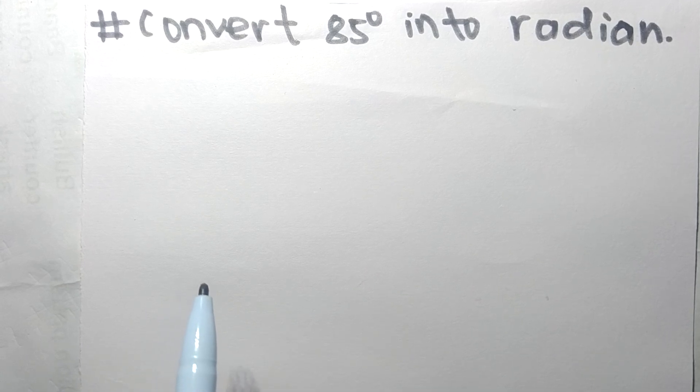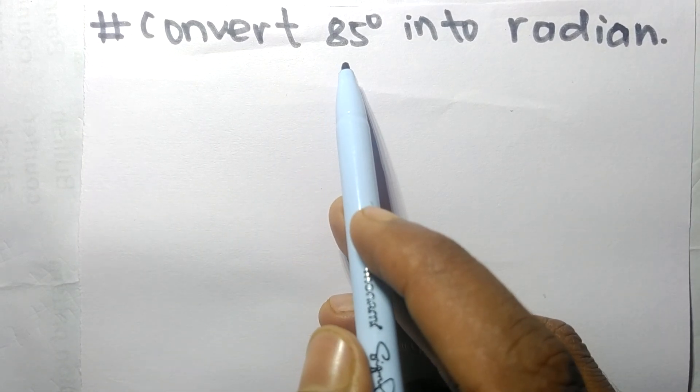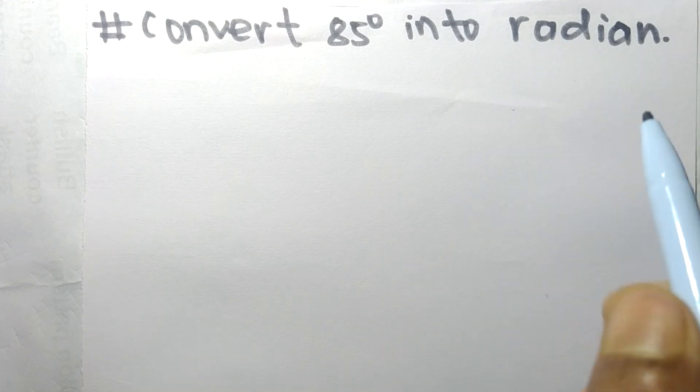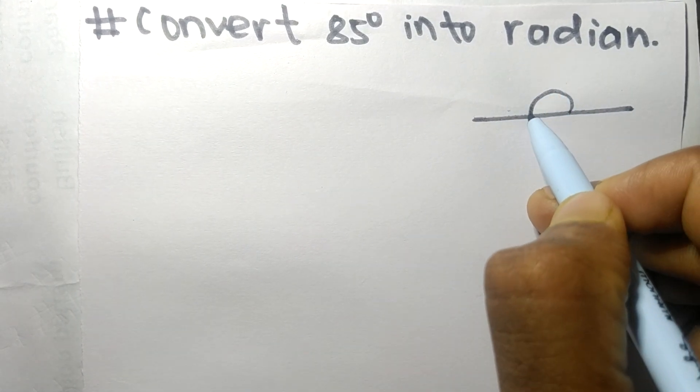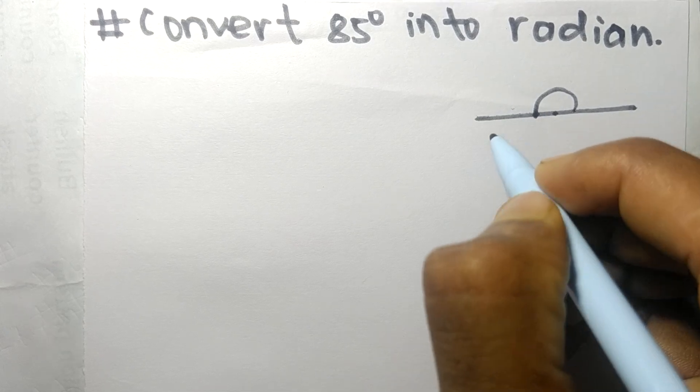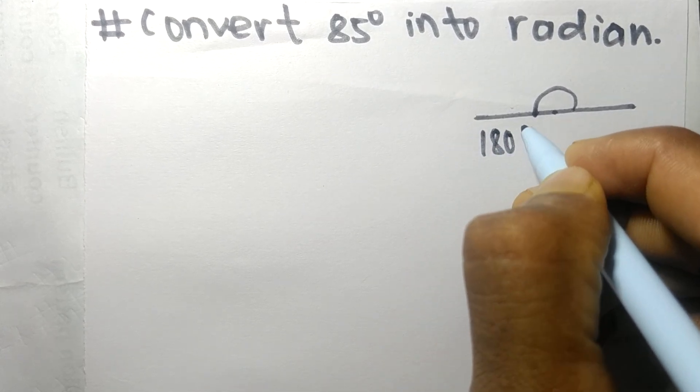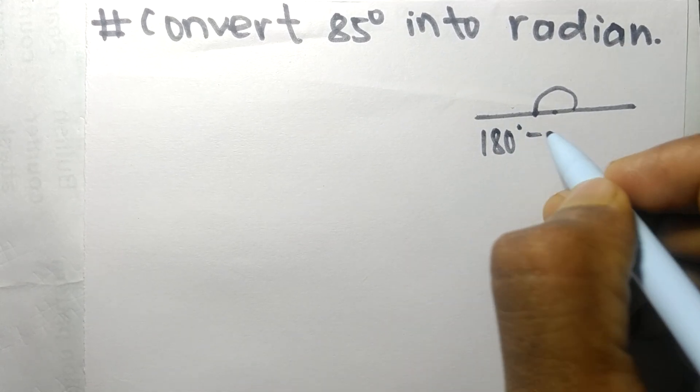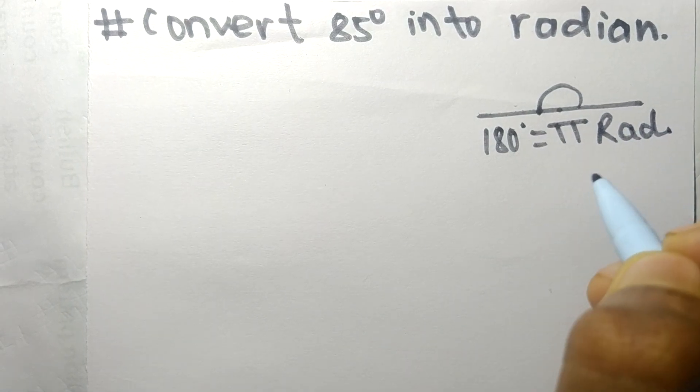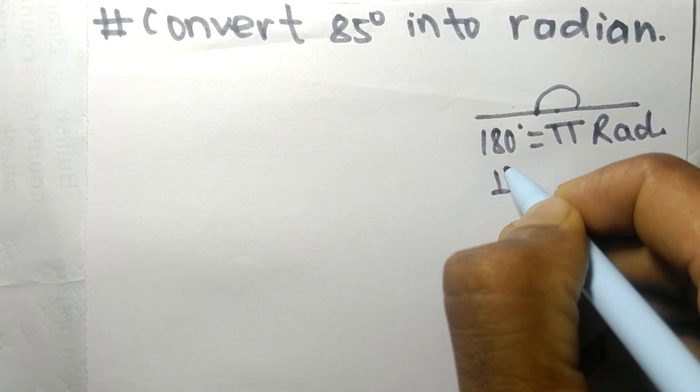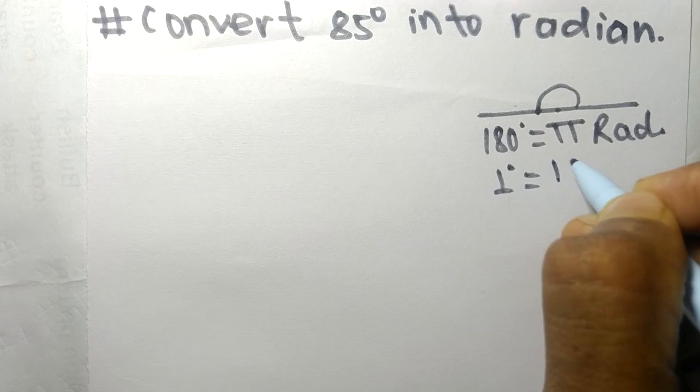Today in this video, we'll convert 85 degrees into radians. In a semicircle, the sum of angles is 180 degrees, which equals π radians. So one degree equals π/180 radians.